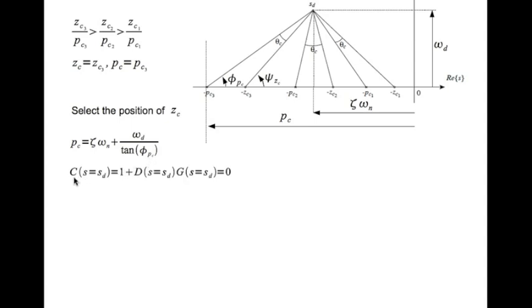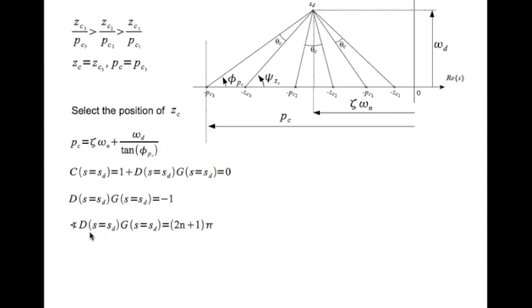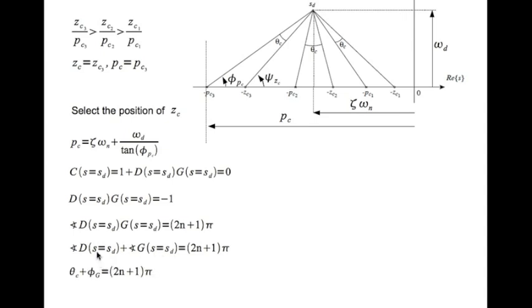We write the characteristic equation C = 1 + DG and evaluate at s = sd. Since sd lies on the root locus, DG evaluated at sd equals -1. Taking angles on both sides: angle(DG) = (2n+1)π. The left-hand side is the angle of the controller theta_c plus the angle of the plant phi_g. Therefore theta_c = (2n+1)π - phi_g.